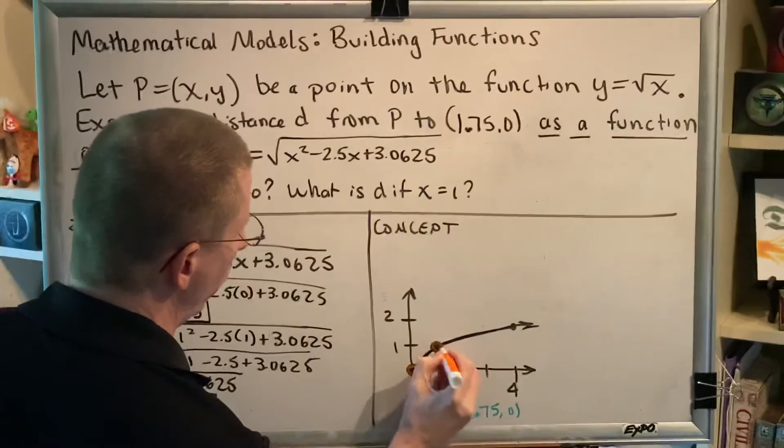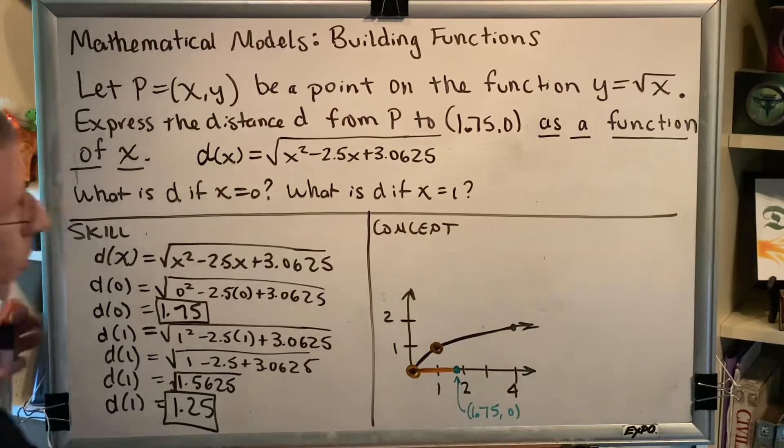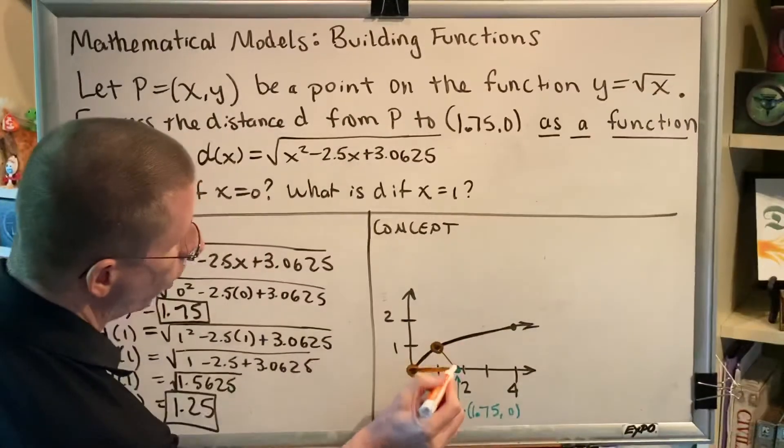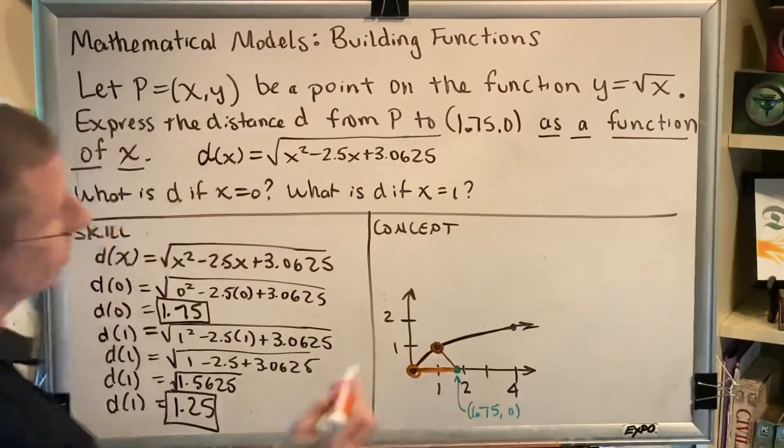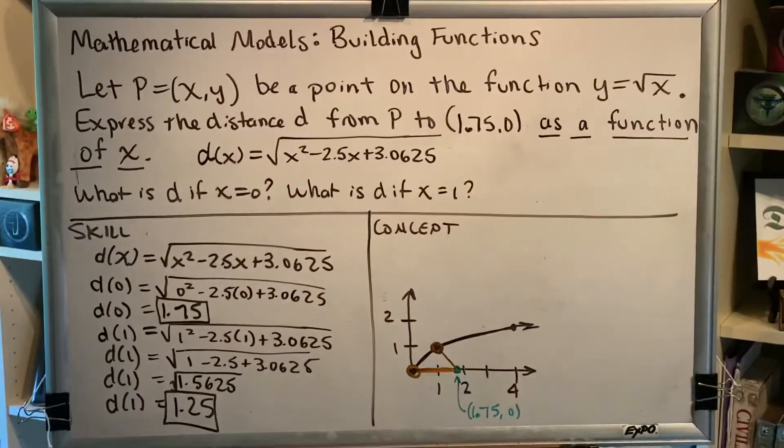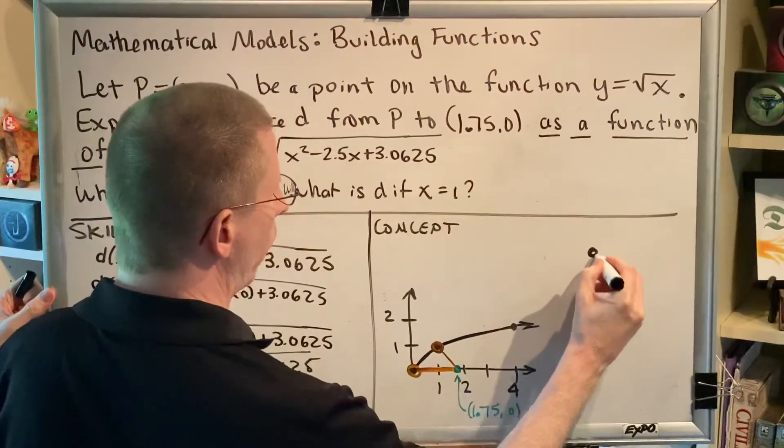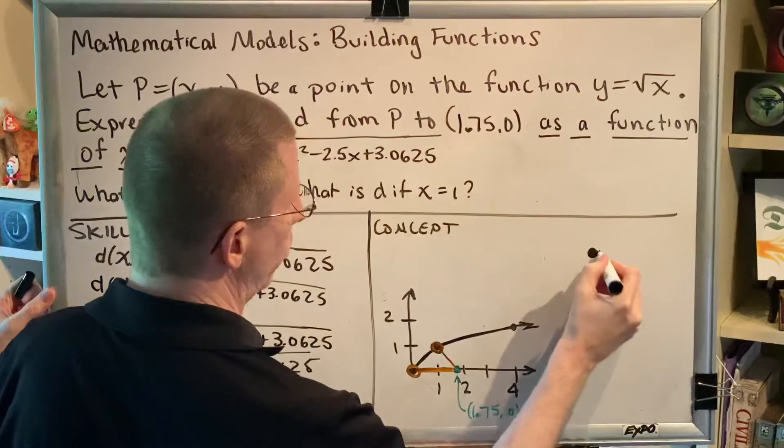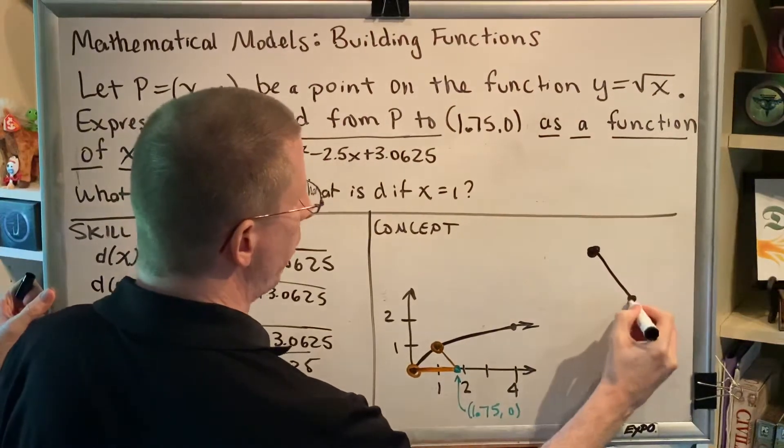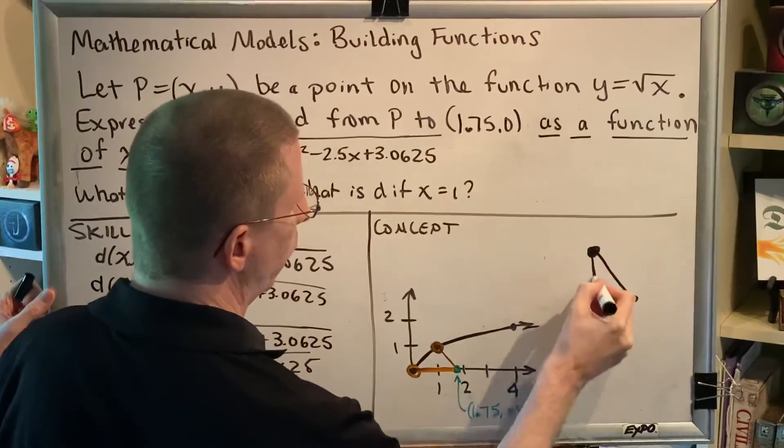And what we're trying to figure out is how far apart are these two points? Well, that's a little harder this time than it was last time. But if we create a triangle from this point down to this point, we can use the Pythagorean theorem in order to figure out what the distance is.